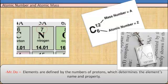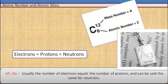Elements are defined by the number of protons, which determines the element's name and properties. Usually, the number of electrons equals the number of protons, and can also be said the same for neutrons.